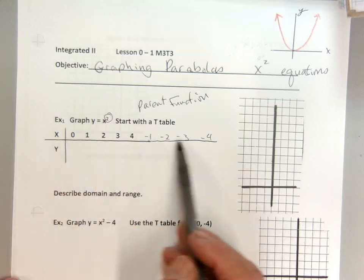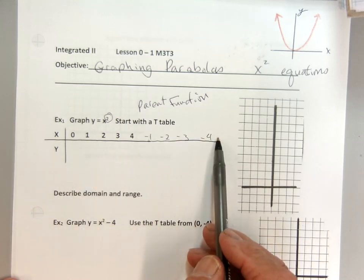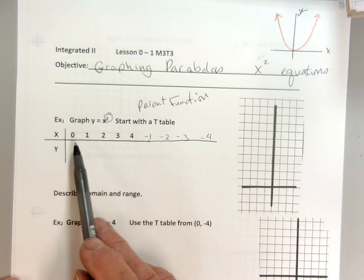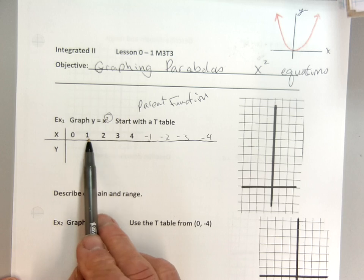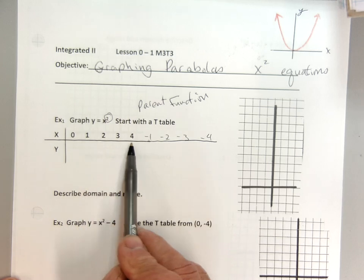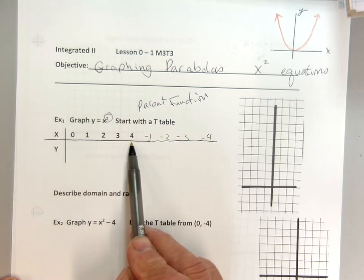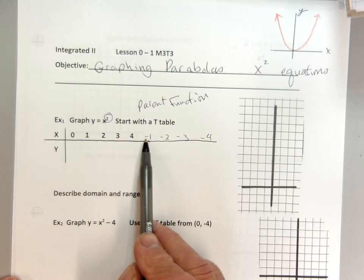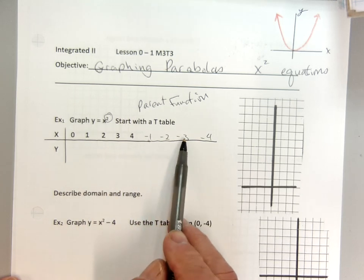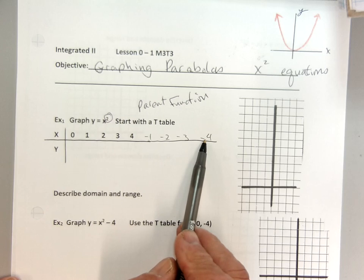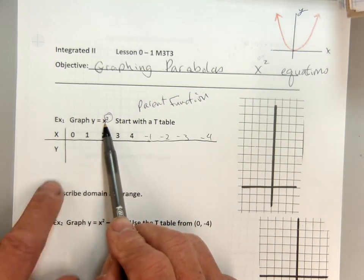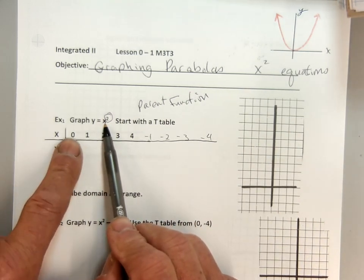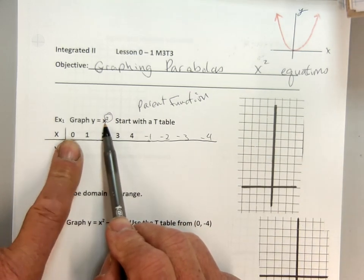We're going to square numbers. So I made a little t-table here. We're going to plug in all of these numbers: 0, 1, 2, 3, 4, and negative 1, negative 2, negative 3, negative 4. So we're just going to plug them in and square them.